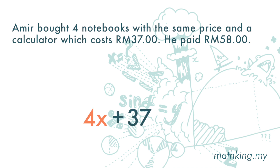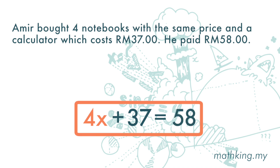A calculator costs 37 ringgit, so we add plus 37. He paid 58 ringgit for all of this, so 4x plus 37 is equal to 58. That is the final equation.